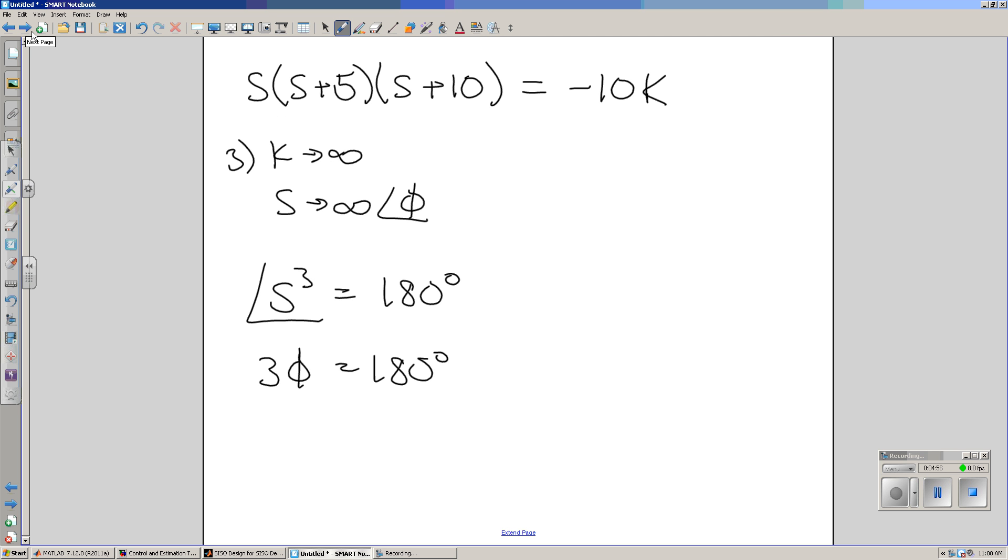Next, let's take the case when k goes to infinity. As k goes to infinity, s really obviously has to go to infinity as well at some angle. The angle is called the asymptote angle. Here, I've got three poles. When you multiply complex numbers, the angles add. So, I've got three times some angle phi equals 180 degrees. Solve for phi. And you wind up with phi is plus minus 60 degrees.